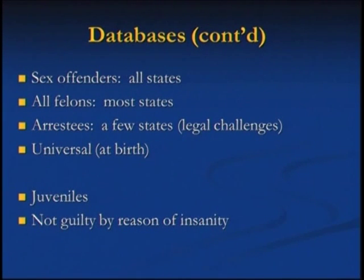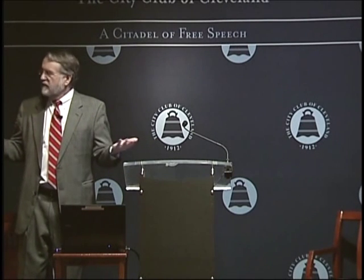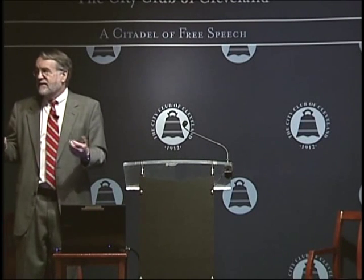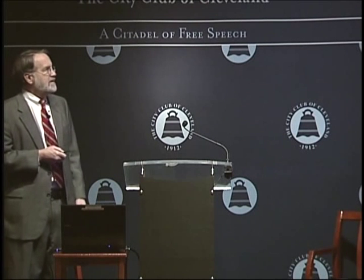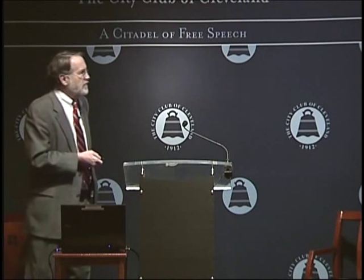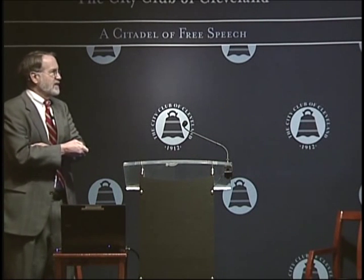They started with all sex offenders, then went to felonies, then some states went to misdemeanors. In Virginia, people were in the database for bad checks, forgery — things you don't associate with violent crimes — but they were getting hits in violent cases. The argument is who should be in there. A few states went to all arrestees. Some have argued for a universal database — everybody — noting that blood samples are already taken from children at birth to check for certain diseases. But we don't have the funds for that.